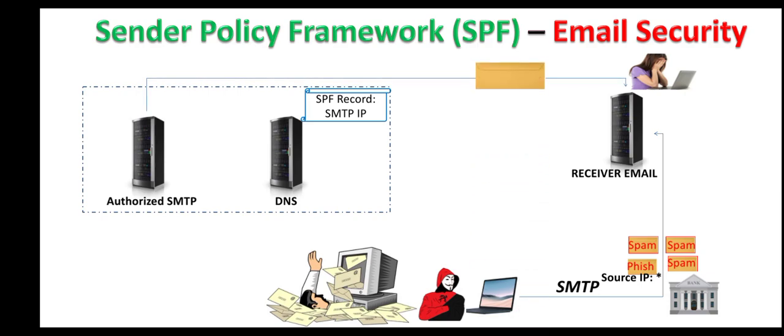Once this authorized mail server sends an email to a mail server outside the domain, the receiving email server checks the envelope of this email which contains the source IP address. The receiving email server then checks the SPF record of the domain to verify whether the source IP address of the email matches the authorized IP address listed in the SPF record.